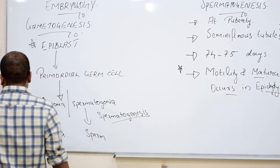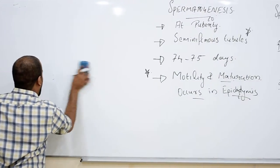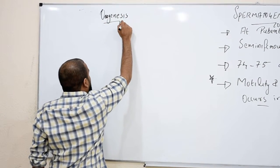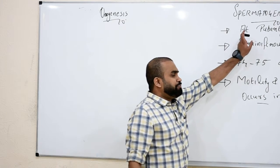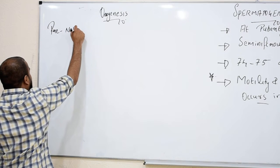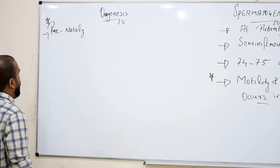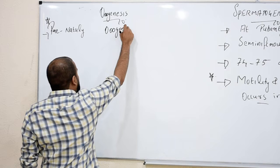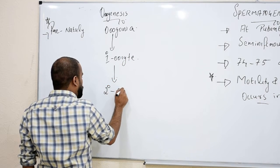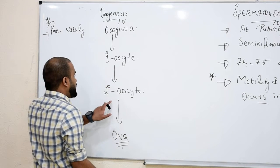Now let's go to oogenesis. For making the embryo we also need ova. Ova are produced from oogonia. An important distinction: while spermatogenesis starts at puberty, oogenesis takes place prenatally — even before the baby is born. Oogonia produce primary oocytes, primary oocytes produce secondary oocytes, and secondary oocytes produce ova.